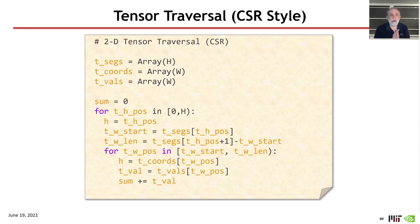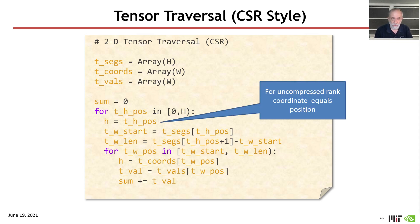Just for reference, compare that representation generically for any concrete representation of the 2D tensor with the code for a CSR-style traversal, where you have to traverse through the cool uncompressed, sorry, so what you're seeing here is for that top uncompressed rank, the position is equal to the coordinate, so I can get the coordinate out.